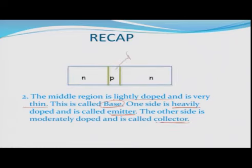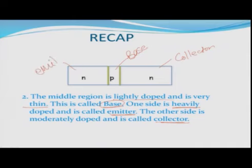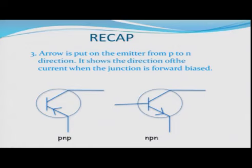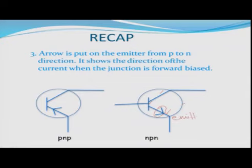One side of the base is heavily doped, which we call the emitter, and the other side is moderately doped, called the collector. This is the base portion sandwiched between the two parts; this is the collector and this is the emitter. Geometrically, the collector is slightly wider in general than the emitter. But the basic distinguishing factor is the doping — the emitter is heavily doped compared to the collector, and the base is of course very lightly doped.